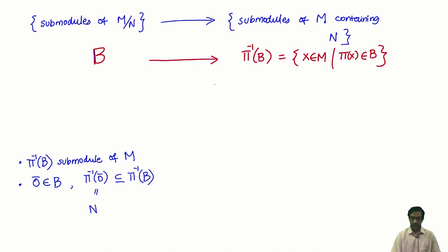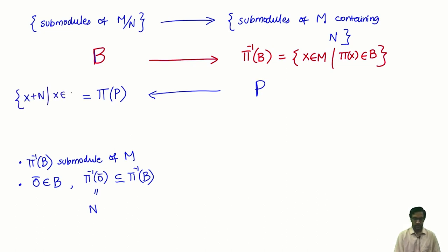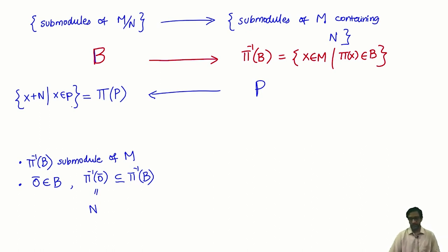Now let us define a map in the other direction. Suppose I give you a submodule P of M which contains N; this map just sends P to π(P) — all the cosets of elements of P. These are the two maps, and I claim they are inverses of each other, giving the bijection we want. Equivalently, we can take one of the two maps and show it is one-to-one and onto.